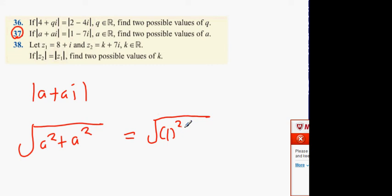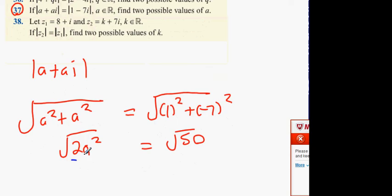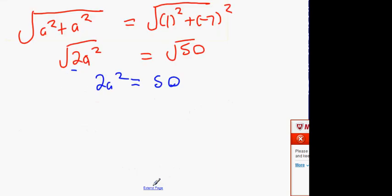So this one here, square root of 1 squared plus minus 7 squared, or 7 squared, same thing. That's going to be root 50. And this is going to be square root of 2a squared. Now guys, what happens now? How do I finish this up? Square both sides. 2a squared equals 50. a squared therefore equals 25. a equals plus 5 or minus 5.